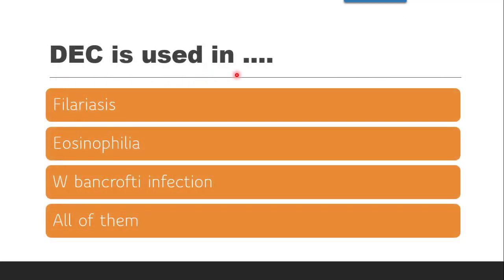Next question: DEC is used in filariasis — yes, it is used in filariasis and eosinophilia. It is also used in prophylaxis and treatment of filariasis and eosinophilia. Then W. bancrofti infection — it is also active against W. bancrofti. The correct answer is all of them. DEC is used in filariasis, eosinophilia, prophylaxis, treatment, and is active against W. bancrofti.